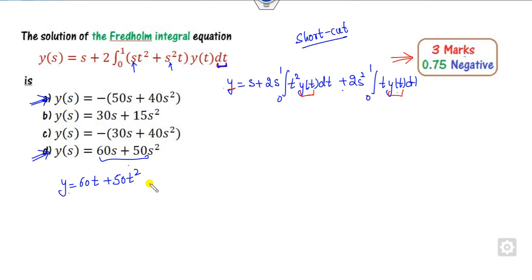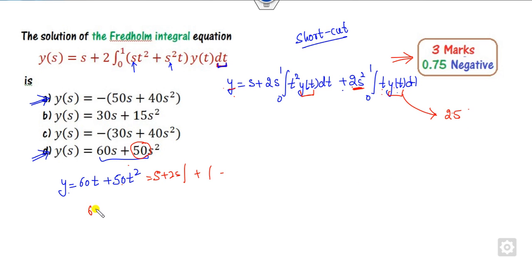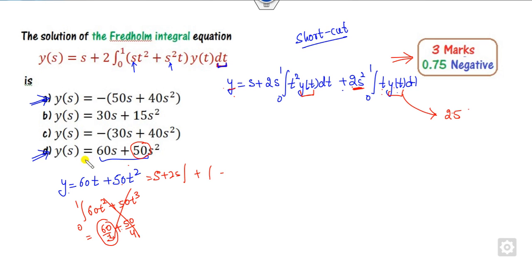For example, if I consider the last option where y(t) = 60t + 50t², I substitute this value of y and try to equate the coefficients. The coefficient of s² on the left-hand side is 50. If I integrate t times 50t³ from 0 to 1, I get 50/4, which gives 60/3 = 20 plus 12 — that does not equal 25, so this option is cancelled out.